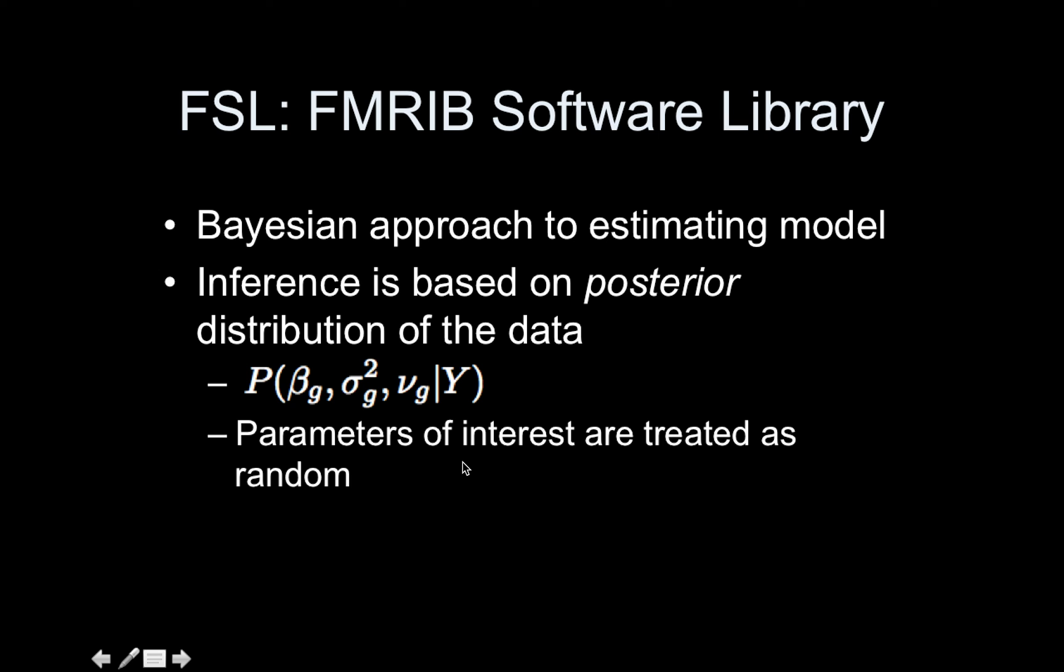The parameters of interest are treated as random. The one simplification: nu g, these are the degrees of freedom which can be actually rather challenging to estimate. There are two versions of this routine. One assumes these are what we normally assume, n minus p, and another one's fancier.